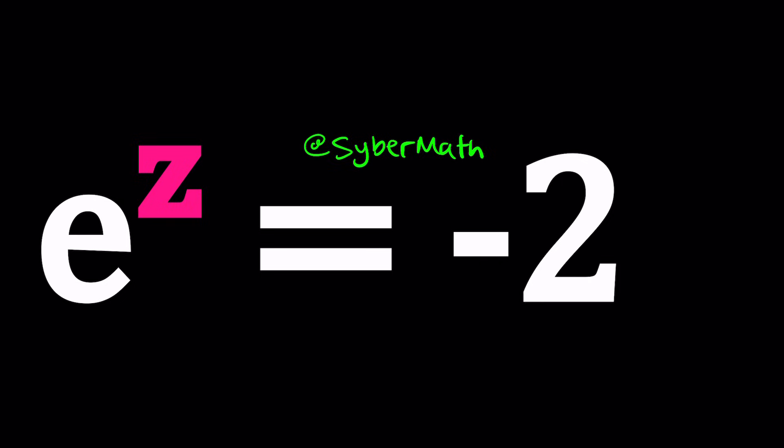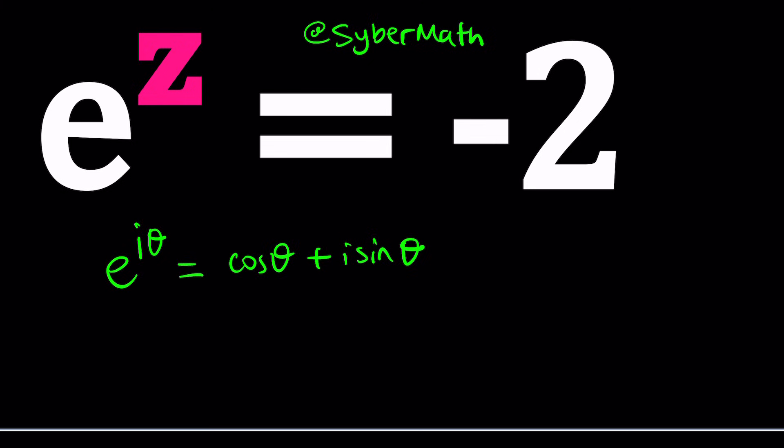So to solve this equation, we can think about a couple formulas. For example, if you know the polar form of a complex number, which can be written as e to the power i theta, thanks to Euler, this is equal to cosine theta plus i sine theta. So do you think we can replace z with that and set the right-hand side equal to negative 2?